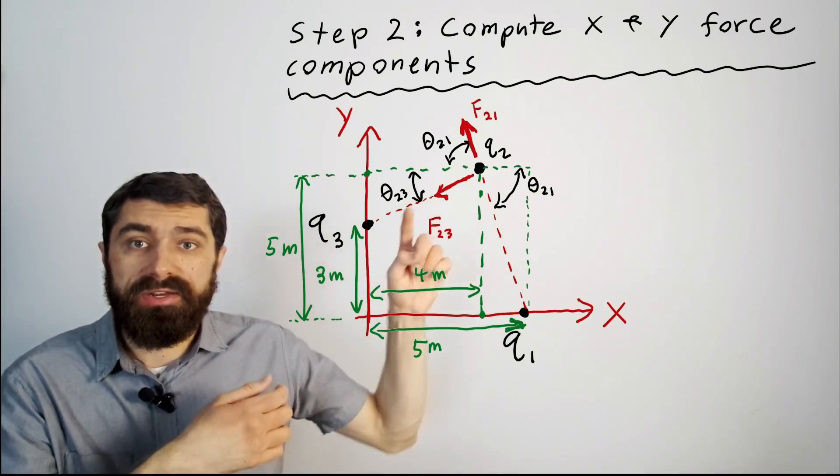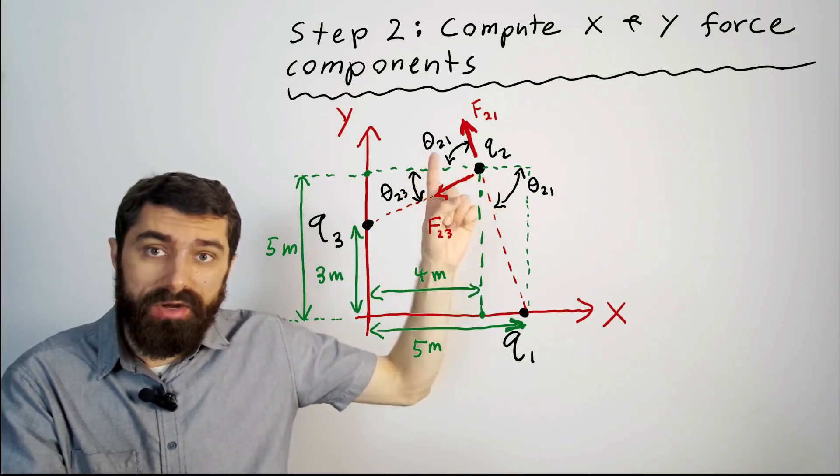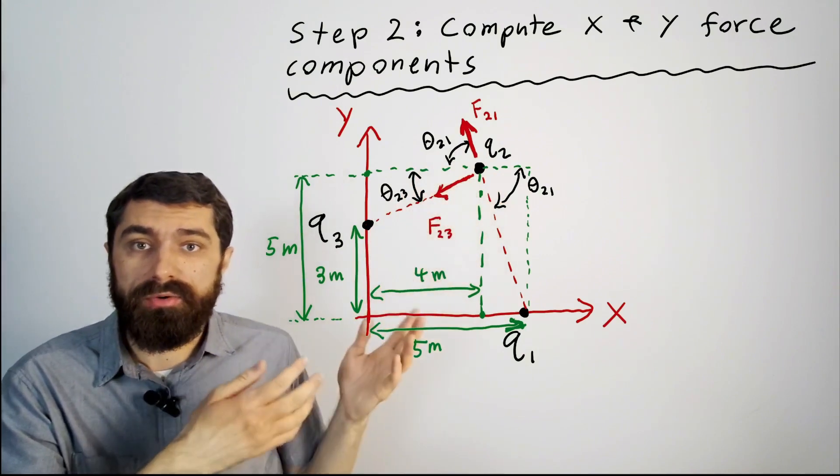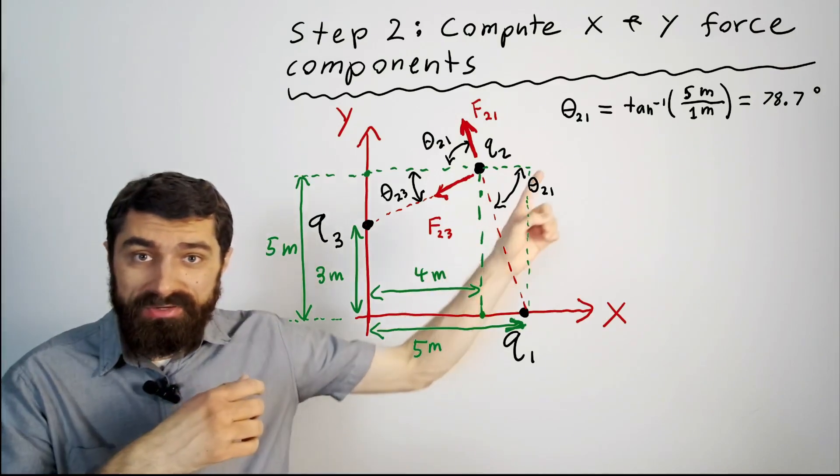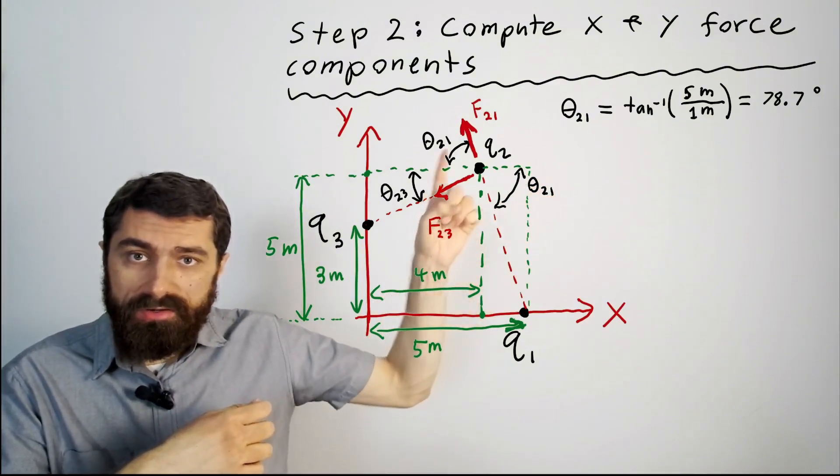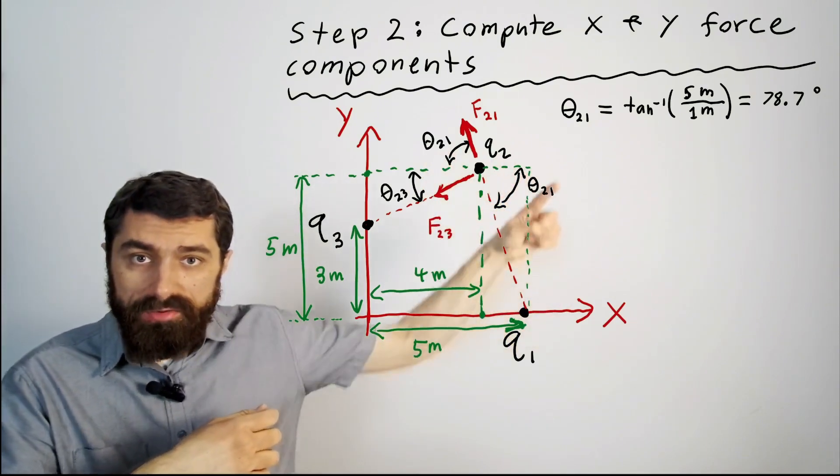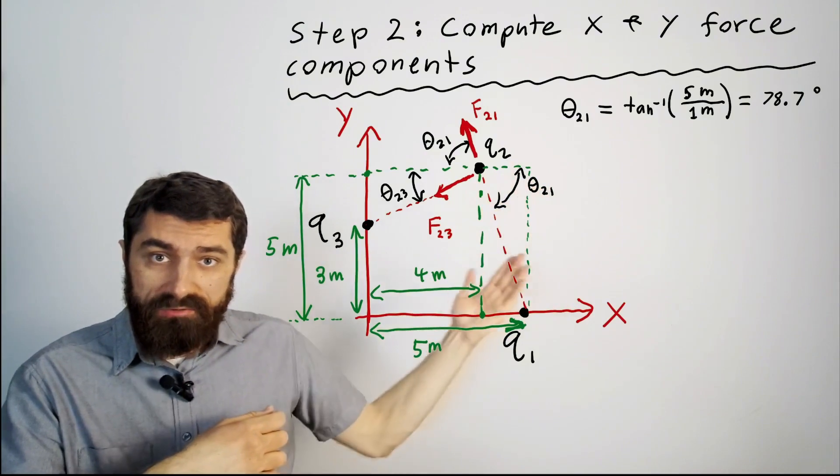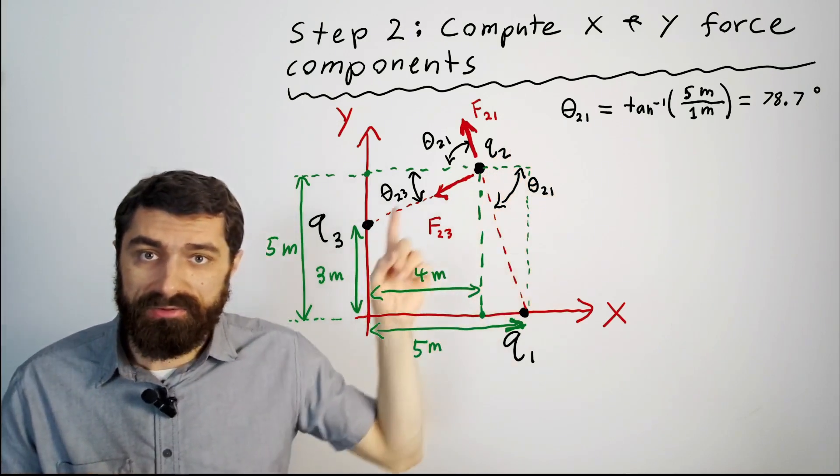Another thing that I have also done is I've labeled the angles here. Theta 23 I'm calling this angle and then theta 21 here. And if I can compute these angles I can then compute the x and y components of the individual forces. So I can go ahead and compute theta 21 using trigonometry here. Theta 21 by geometry it's the same angle over here and you can see now we have this right triangle this distance here is 5 meters this distance here is 1 meter. So if I take the inverse tangent of 5 divided by 1 there I can then calculate my angle theta 21.